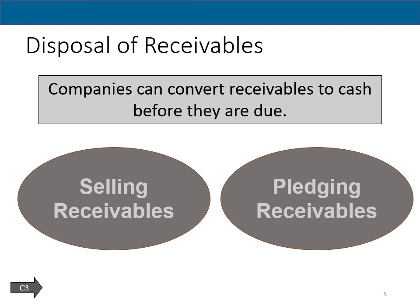The last thing to be aware of for receivables is that they are commonly traded. Companies may need to convert receivables into cash due to working capital management issues — to get money quicker. So they may sell receivables at a discount to collection companies, or they may pledge receivables and basically get a loan against them. These are two methods that companies may employ to accelerate the cash collection cycle so that they can continue to operate without waiting on receivables to come in.